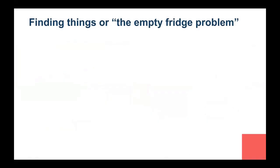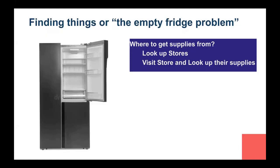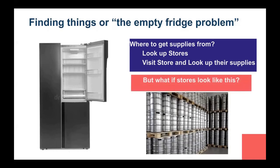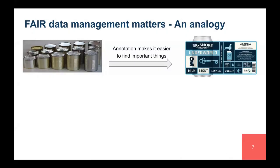Let's take the hypothetical situation where your country is about to go into lockdown and you want to cook something, but your fridge looks empty. You want to go to shops, but you can't find them because there is no way to know where the shops are. And if you happen to find a store, when you look at the supplies, they're a big mess — you have no idea what is being sold.